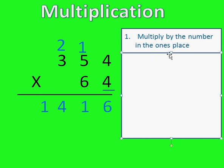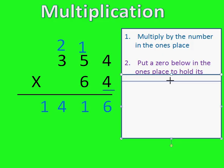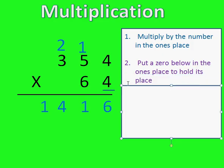So that brings us to the next step. The next step is put a zero below in the ones place to hold its place. Right here I'm going to put a zero. The reason why is because we are now multiplying by tens. I'm not just multiplying by six now. I'm going to multiply basically by six groups of ten. So I don't need anything in my ones place. I'm putting the zero to hold its place.